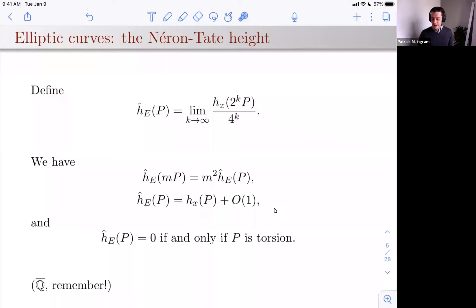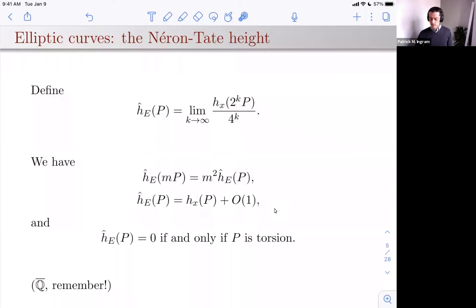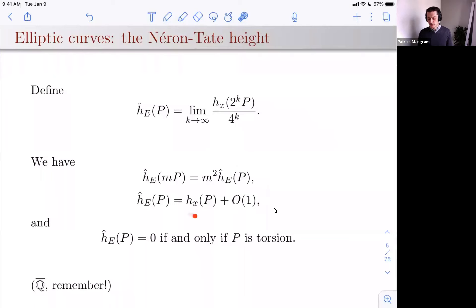If the height of 2^k times P grows like 4^k, and if you divide by 4^k and take a limit, you might expect that to converge. Indeed it does, and that's the definition of the Néron-Tate height. The Néron-Tate height has three nice fundamental properties — the first two uniquely determine it. The first is that it is exactly quadratic: I've straightened out the squiggly lines. And it is the height you started with up to some bounded function, so you haven't departed too far from the honest geometric height function that comes from a map to projective space.